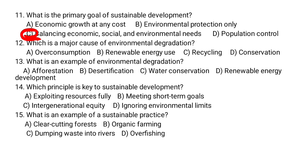Question number twelve: over-consumption is a major cause of environmental degradation — a is the correct answer. Question number thirteen: desertification is an example of environmental degradation — b is the correct answer. Question number fourteen: intergenerational equity is the principle key to sustainable development — c is the correct answer. Question number fifteen: organic farming is an example of sustainable practices — b is the correct answer.